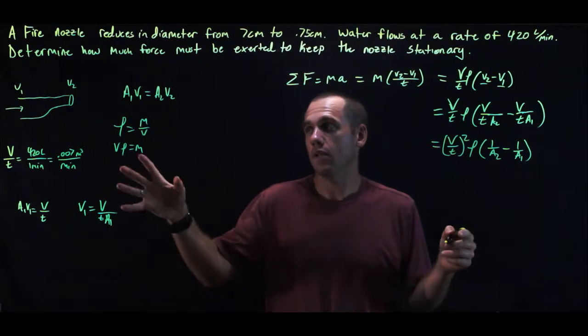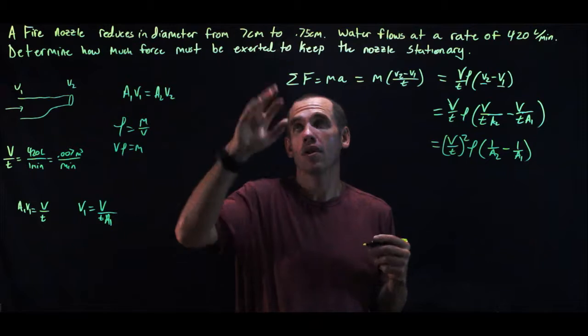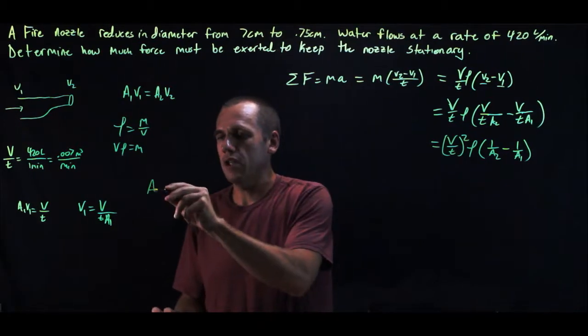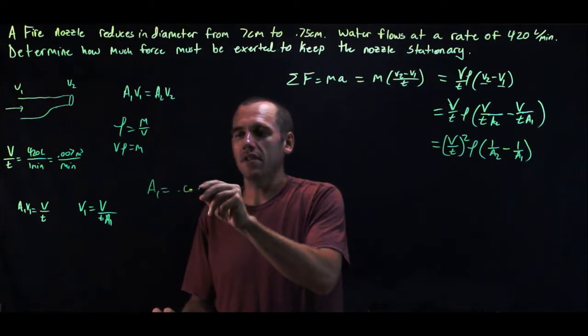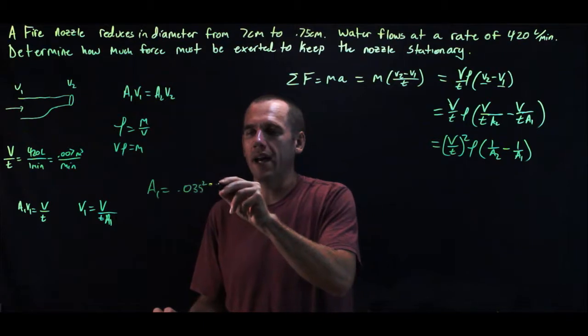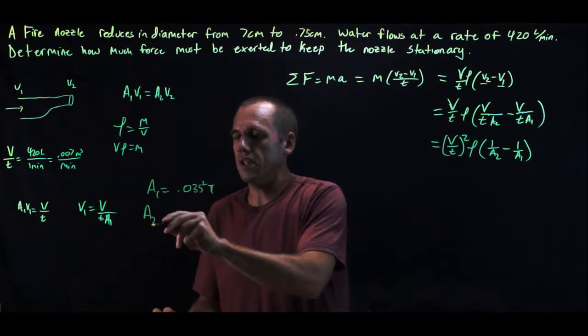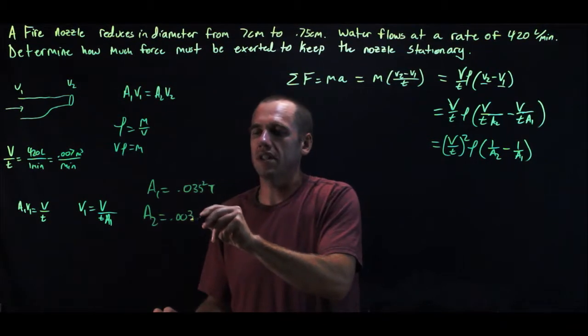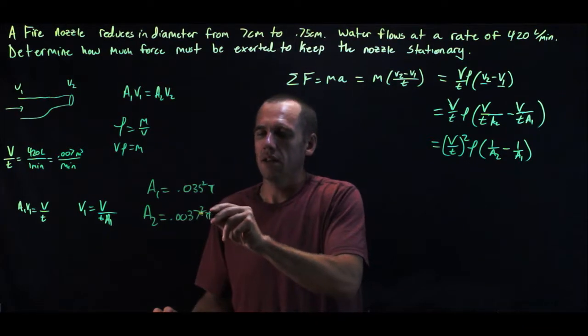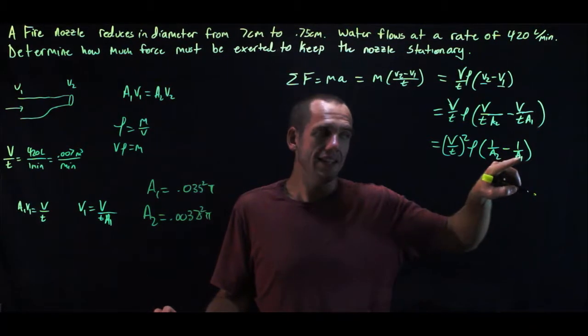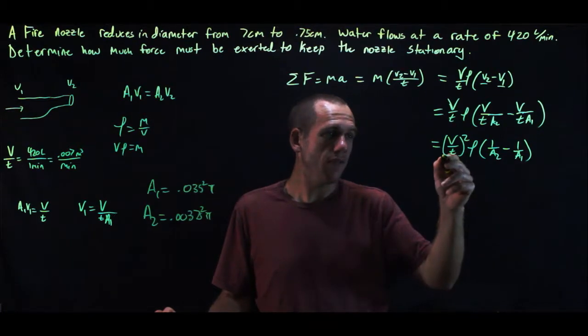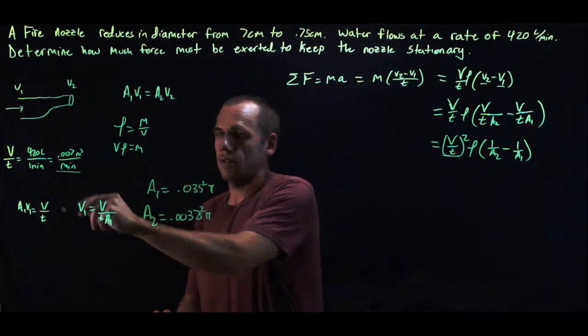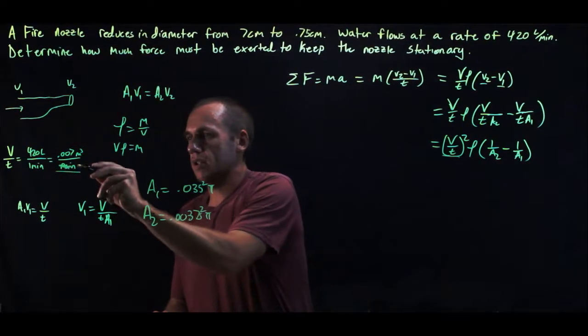We know A1 and A2. We have to do the math to figure it out. But since you know the diameter, A1 is equal to 0.035 squared pi. And A2 is equal to 0.00375 squared pi. You can throw that into these equations. And you know the volume rate of flow. That's this 0.007. That's cubic meters per second.